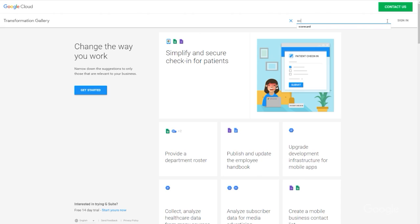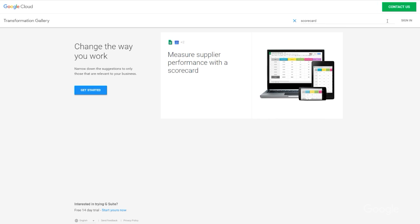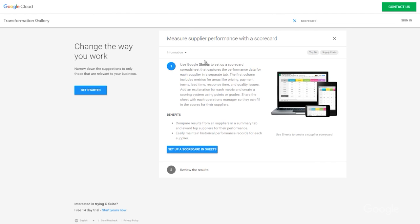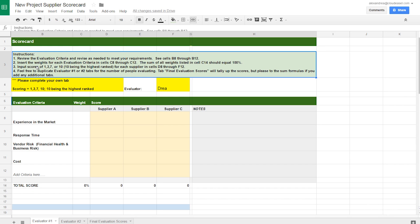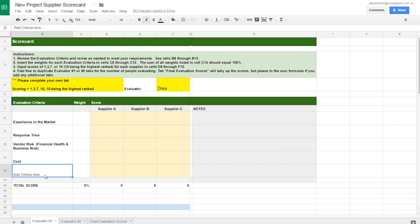This time, we'll search for scorecard. Using this card, I'll put together a scorecard spreadsheet that captures the evaluation criteria of each supplier we're looking to use for a specific project. In the first column, rows 8 through 11, we'll evaluate four different categories or anything you'll need to evaluate. This can be tailored to specific needs of the project.